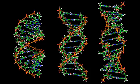Eukaryotic organisms — animals, plants, fungi, and protists — store most of their DNA inside the cell nucleus and some of their DNA in organelles, such as mitochondria or chloroplasts. In contrast, prokaryotes — bacteria and archaea — store their DNA only in the cytoplasm.